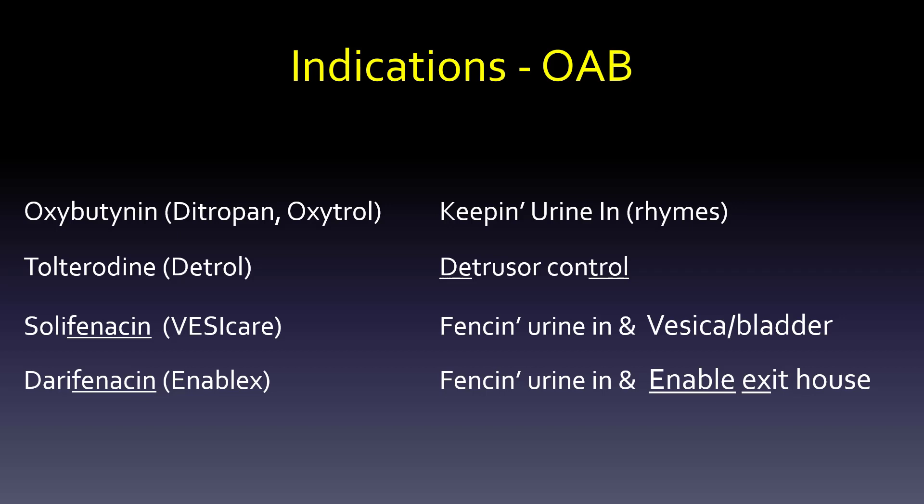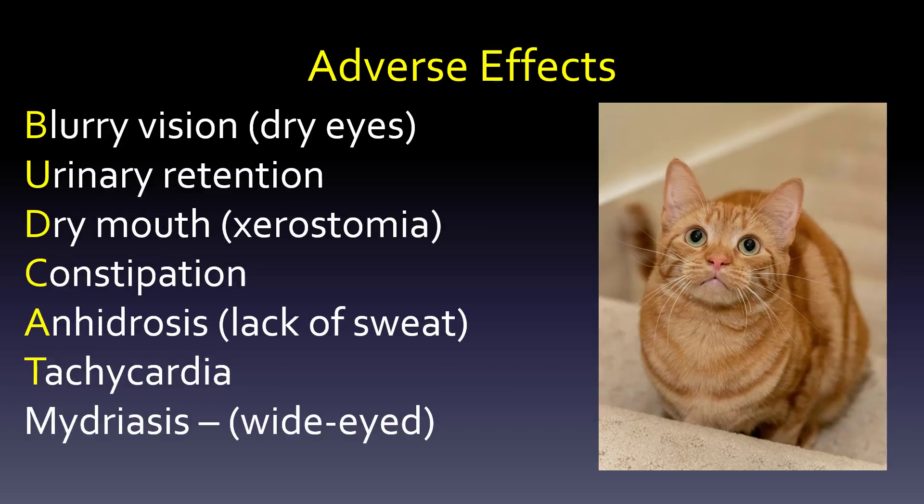You're enabling an exit from the house because many people with overactive bladder feel uncomfortable going out — they're worried about having an accident. When we go back to the adverse effects for these four drugs, we see our cat again: blurry vision, urinary retention, dry mouth, constipation, anhydrosis, tachycardia, mydriasis. But these drugs are getting more specific for urinary retention, so the idea is that some of these other side effects may be minimized.